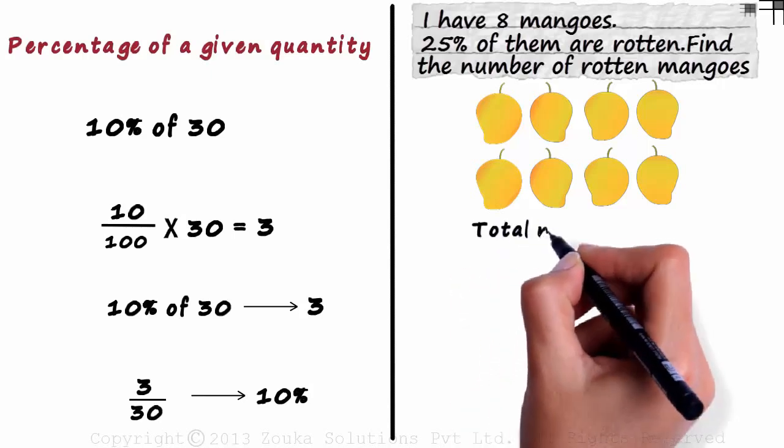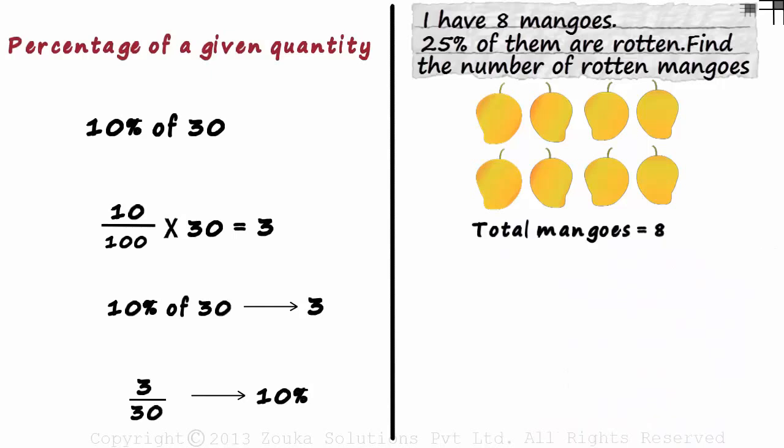The total number of mangoes is 8. And it says that 25% of the total mangoes are unfit for consumption. So 25% of 8 are rotten.